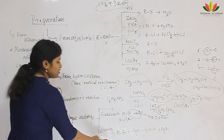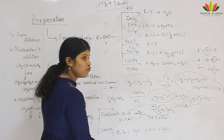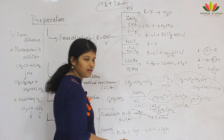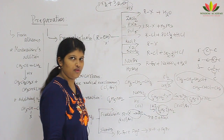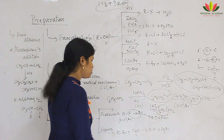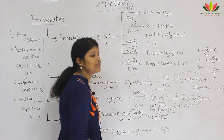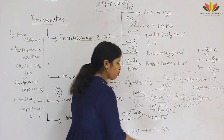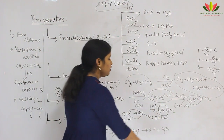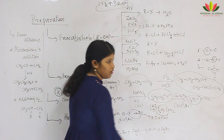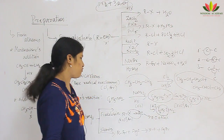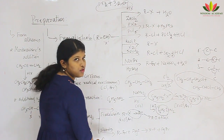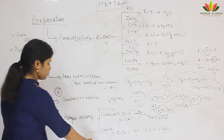The second halogen exchange method is Swartz, used to get fluorine compounds. We can take even a chlorine compound; if we treat it with a silver fluoride salt, we get a fluorine compound and silver bromide or silver chloride as byproducts. So for iodine compounds it is Finkelstein, and for fluorine compounds it is Swartz.